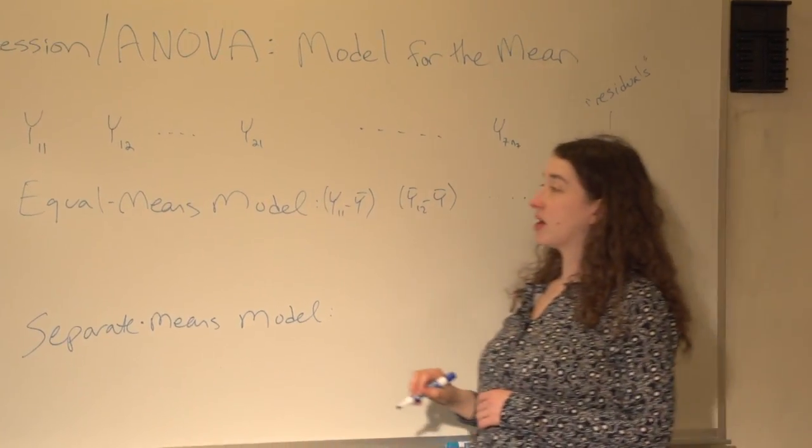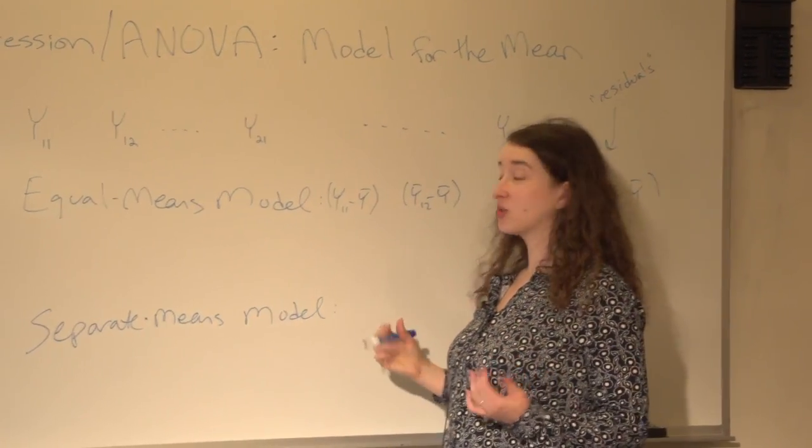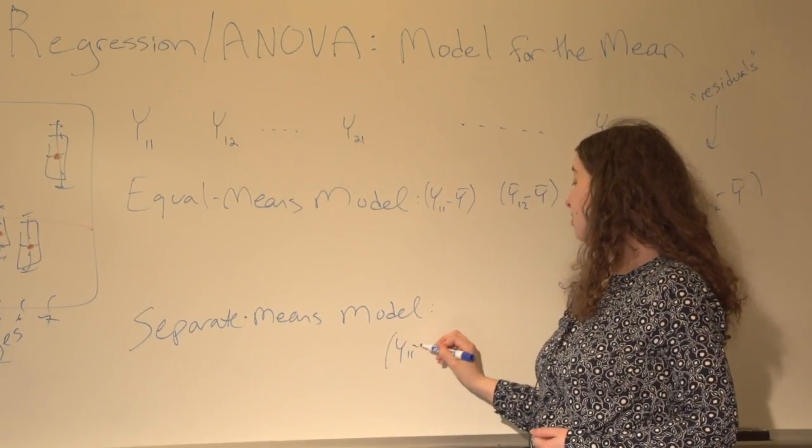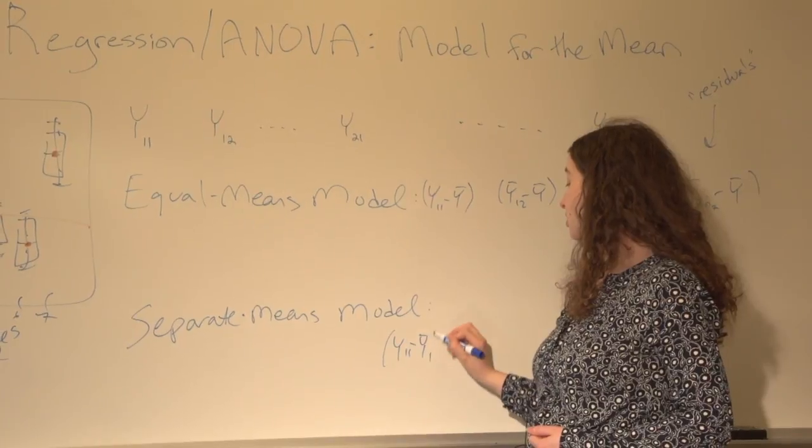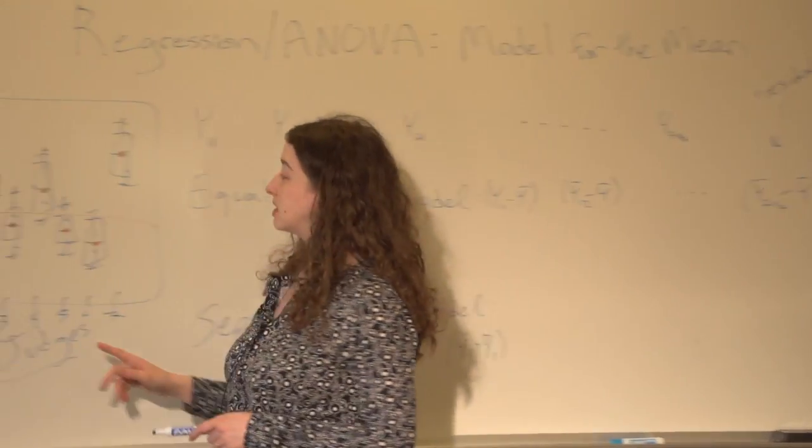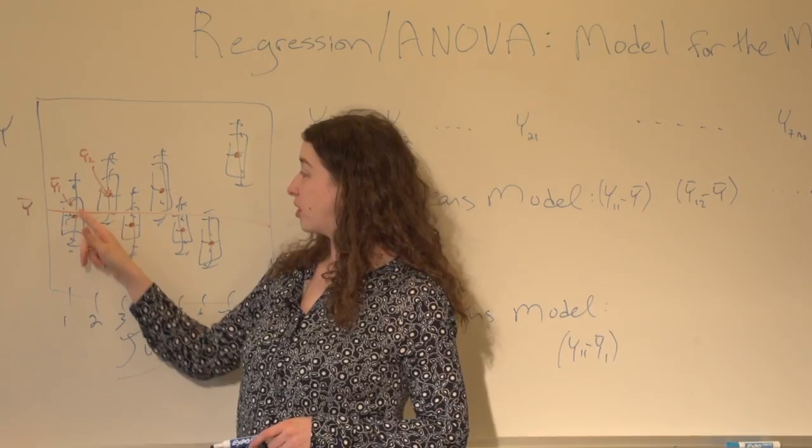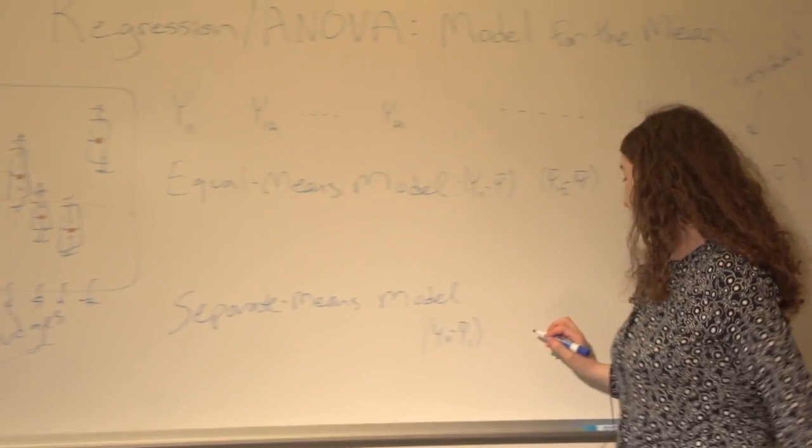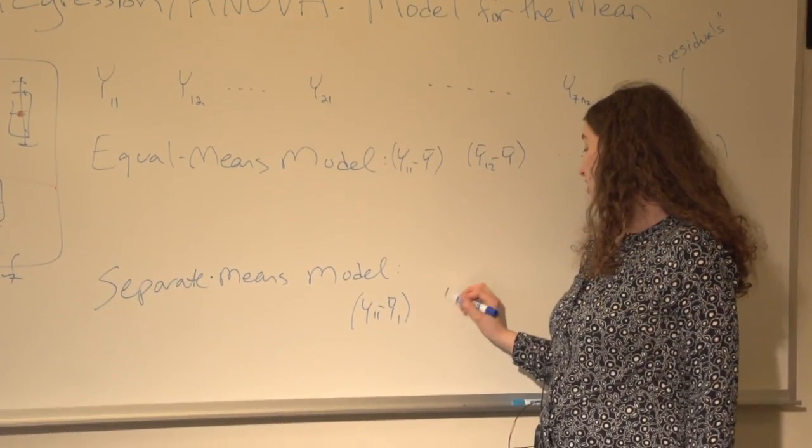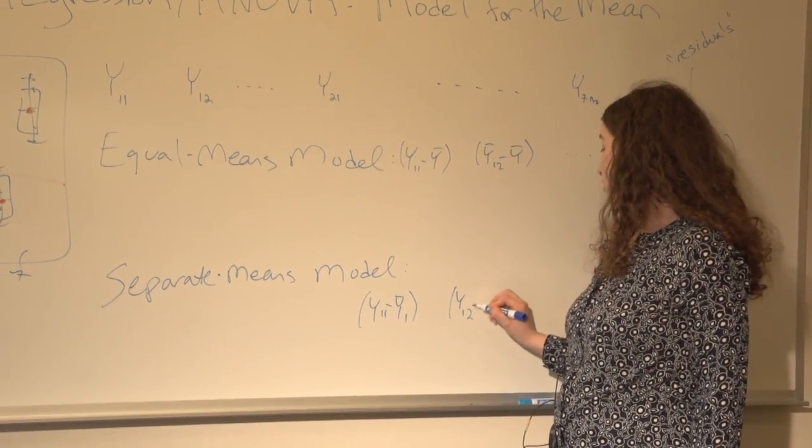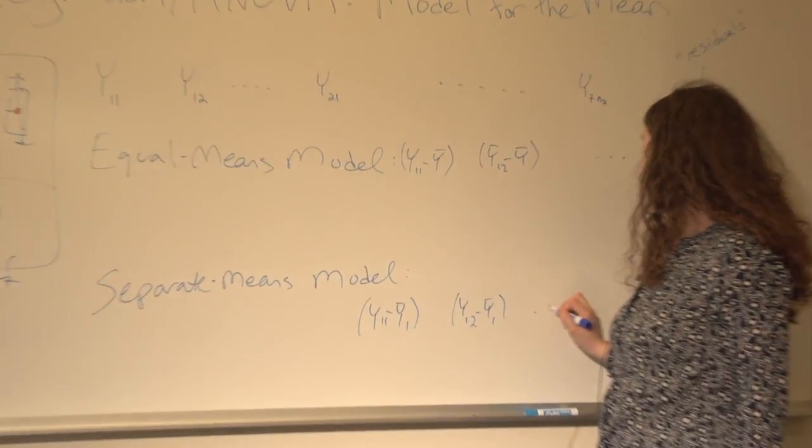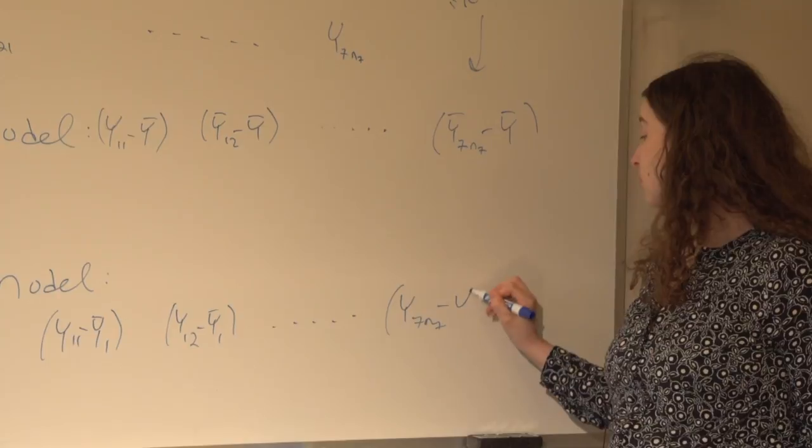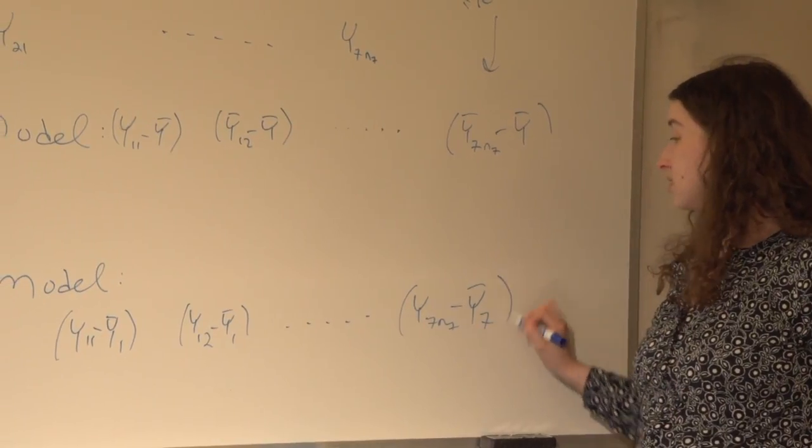What about the separate means model? How are we going to similarly assess whether that's appropriate? Well, we can take each data point and subtract from it the mean in its own group. Because with the separate means model, if I want to see how far a data point is from the mean predicted by the model, it's going to be the mean only in that one group. So y 1 1 minus y 1 bar, y 1 2 minus y 1 bar, etc. y 7 n 7 minus y 7 bar.